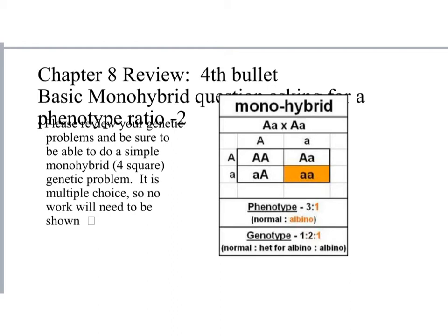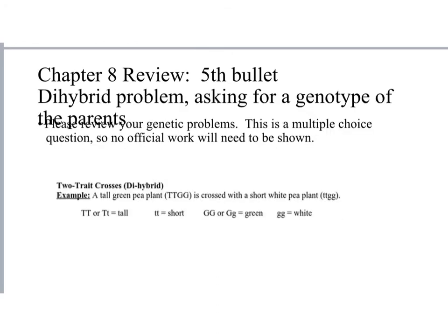There will also be a dihybrid problem asking you to figure out the genotypes of the parents. Review your notes and graded genetic problem packet on dihybrids. It is multiple choice — no official work needs to be shown. For example, if a tall green pea plant is crossed with a short white pea plant, you need to determine the genotypes of both parents using knowledge of dominant and recessive traits.